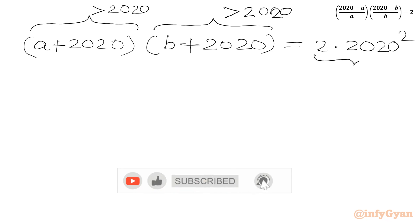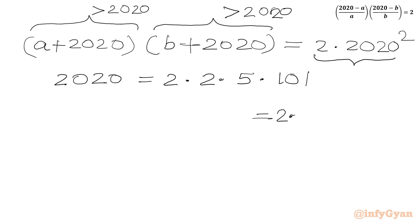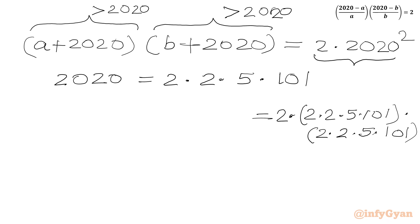Now we factor the RHS. The prime factorization of 2020 is 2 times 2 times 5 times 101. So 2·2020 squared equals 2 times (2·2·5·101) times (2·2·5·101). We need to distribute the RHS into two factors each greater than 2020.